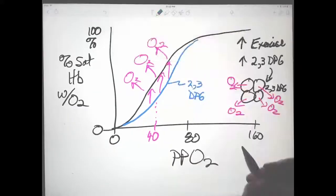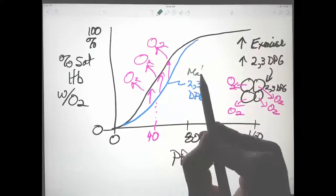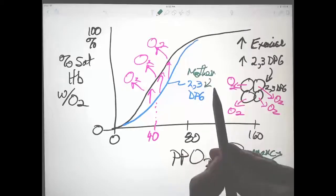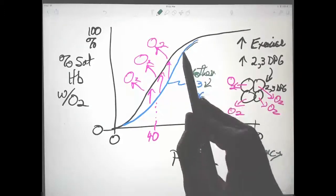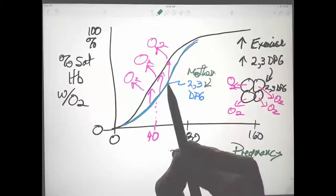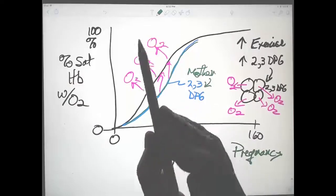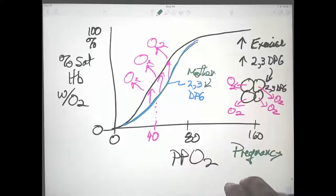There's another condition that does this, which is pregnancy in a mammal. The mother produces more 2,3-DPG that decreases the affinity of her hemoglobin for oxygen and frees up oxygen to be released more easily to the fetus.